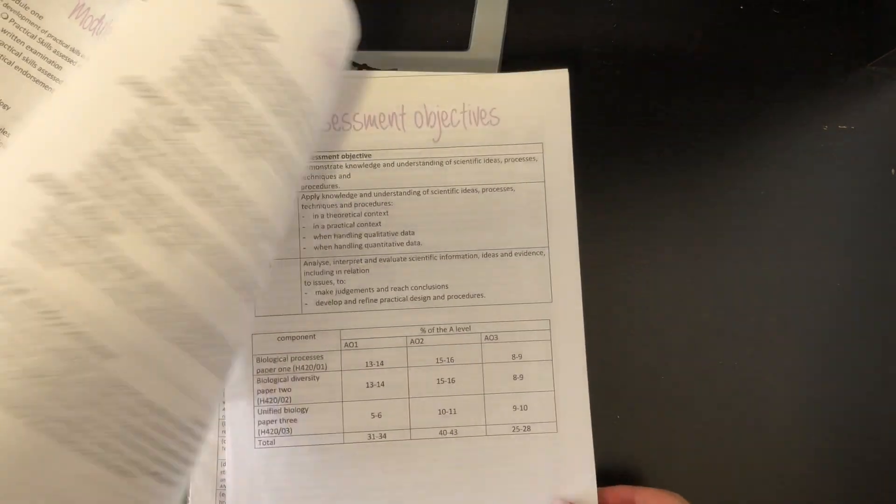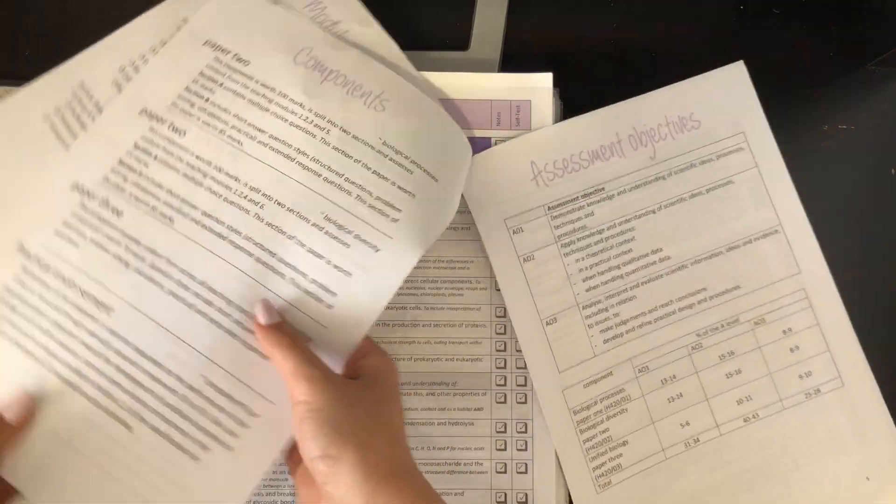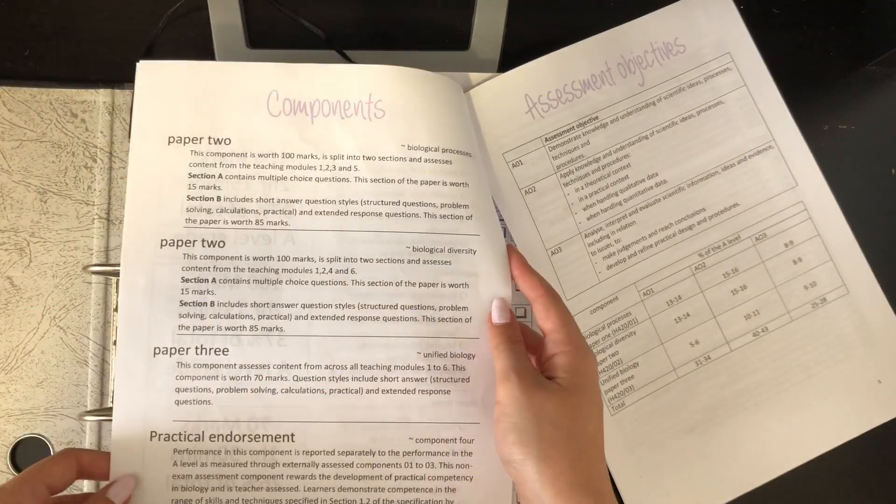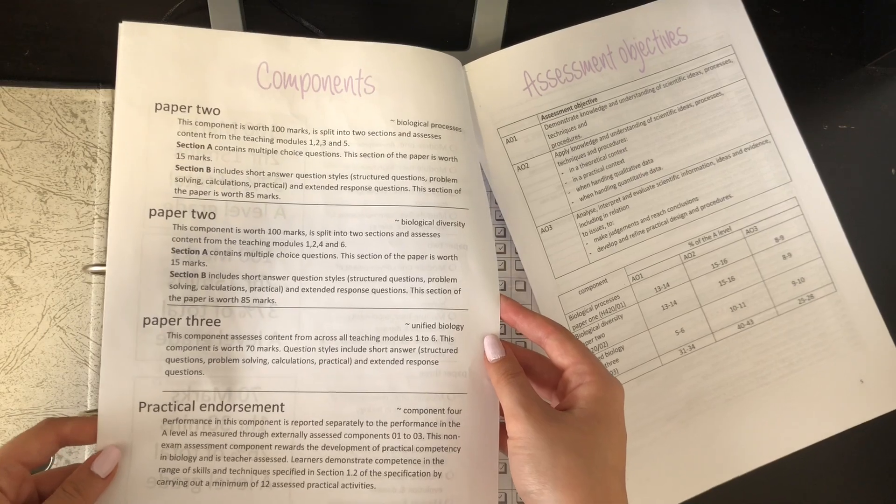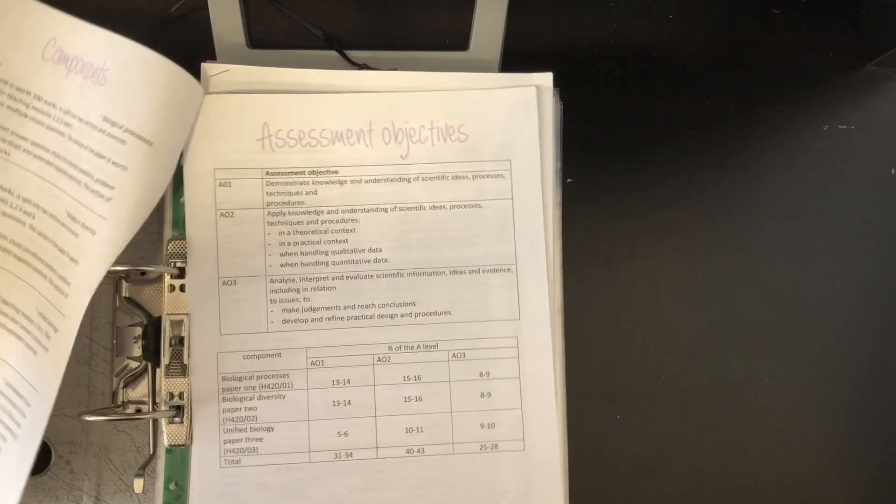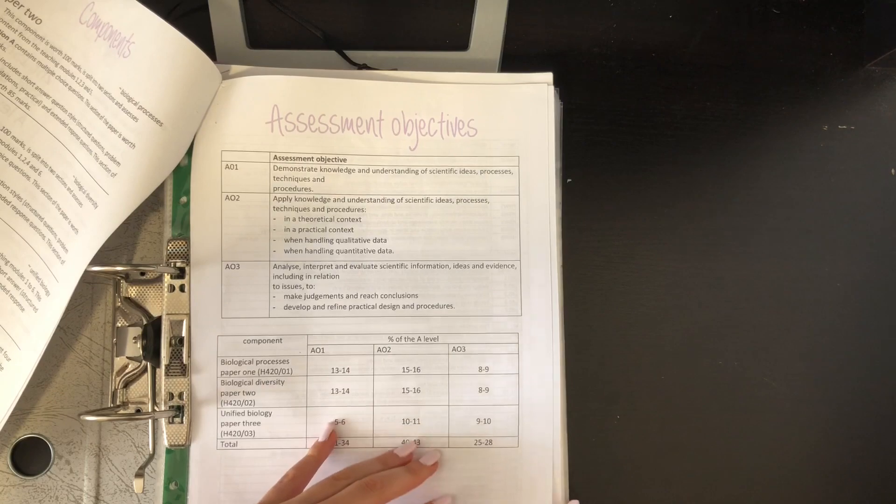Then on the next page, you can see the components of the way that each exam paper would have been laid out, including the practical endorsements. So here are the assessment objectives I would have needed to achieve.